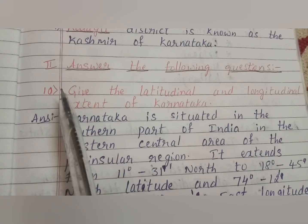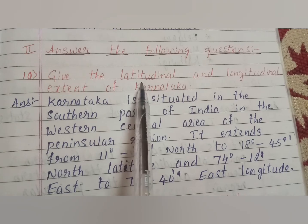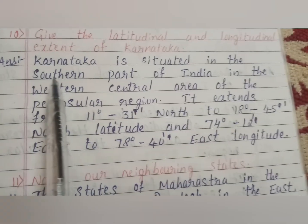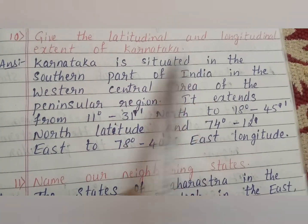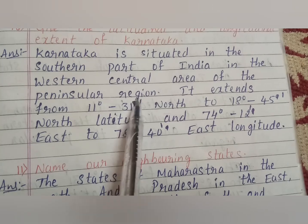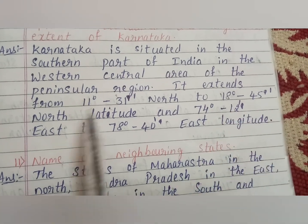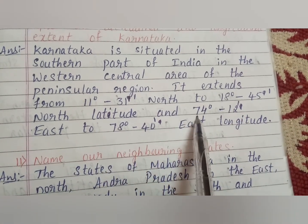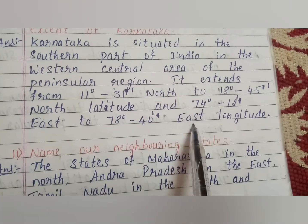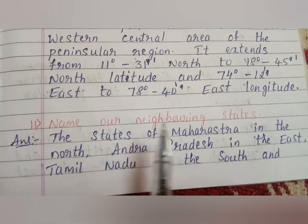The next section is answer the following questions. First question: give the latitudinal and longitudinal extent of Karnataka. Answer: Karnataka is situated in the southern part of India, in the western central area of the peninsular region. It extends from 11°31' to 18°45' north latitude and 74°12' east to 78°40' east longitude.